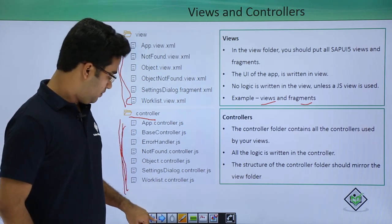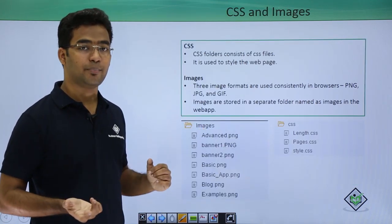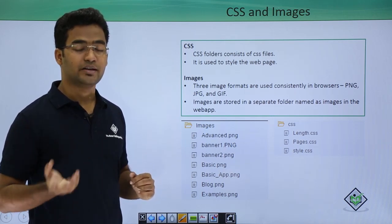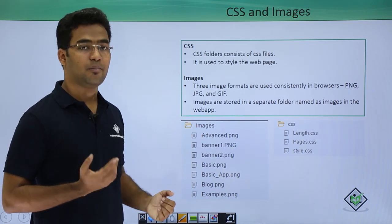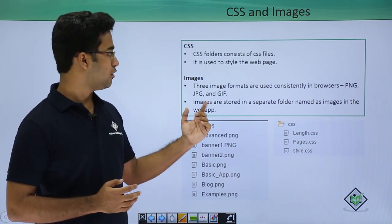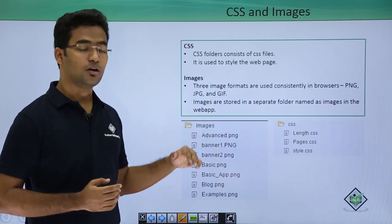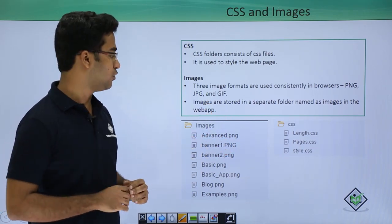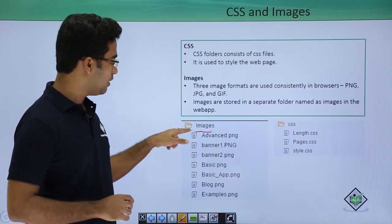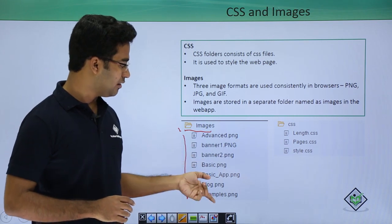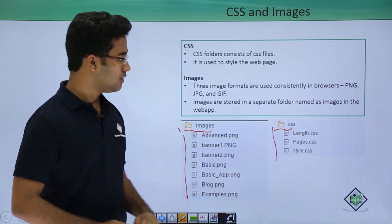Moving on to CSS and images: CSS is generally used to style web pages, and all CSS files (.css) are kept in the CSS folder. SAPUI5 supports different kinds of images — PNG, JPG, and JPF files — and all these files are stored in the images folder. Here I have the images folder with all images maintained in it, and the CSS folder with all CSS files maintained within it.